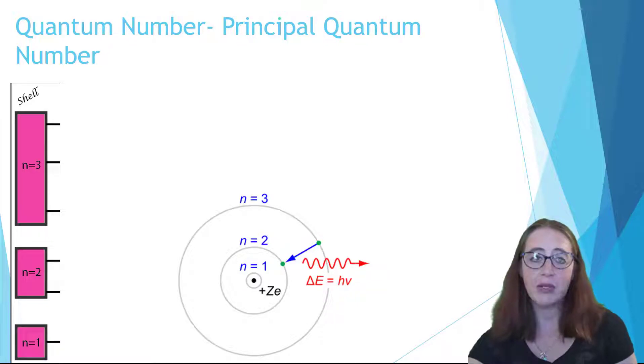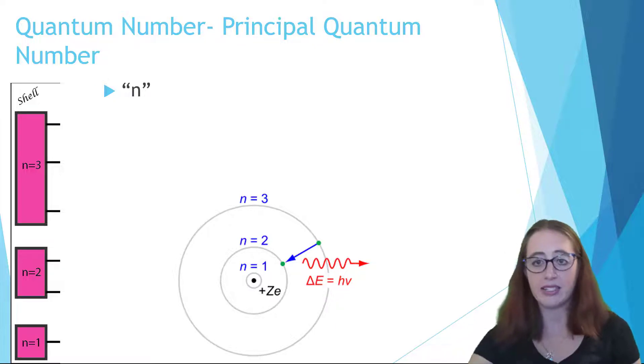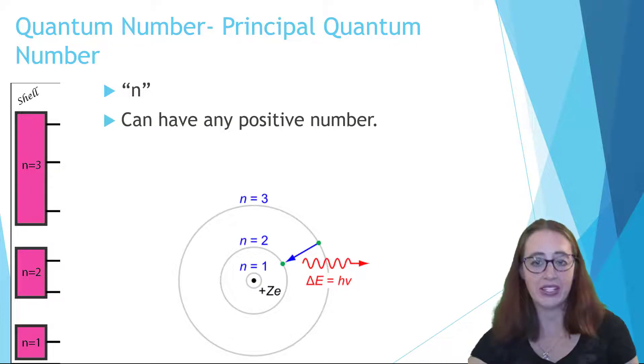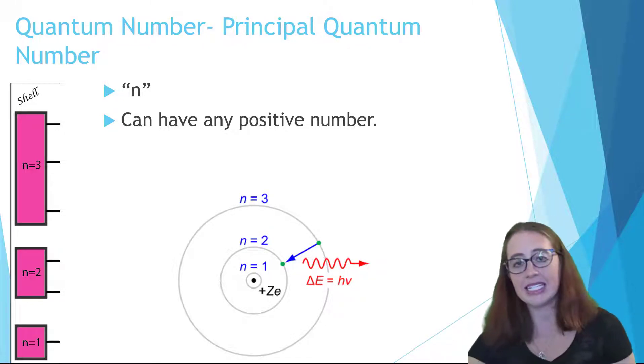n is the principal quantum number. As mentioned before, this is the same n that we talked about when discussing the Bohr model of the atom. Each of the quantum numbers has rules about what they are allowed to equal. n is allowed to be any positive integer. So one, two, three, and so forth all the way up. Of course, at some point we don't have any elements which have electrons with that high of an n, but that doesn't mean that it doesn't theoretically exist and isn't theoretically allowed.